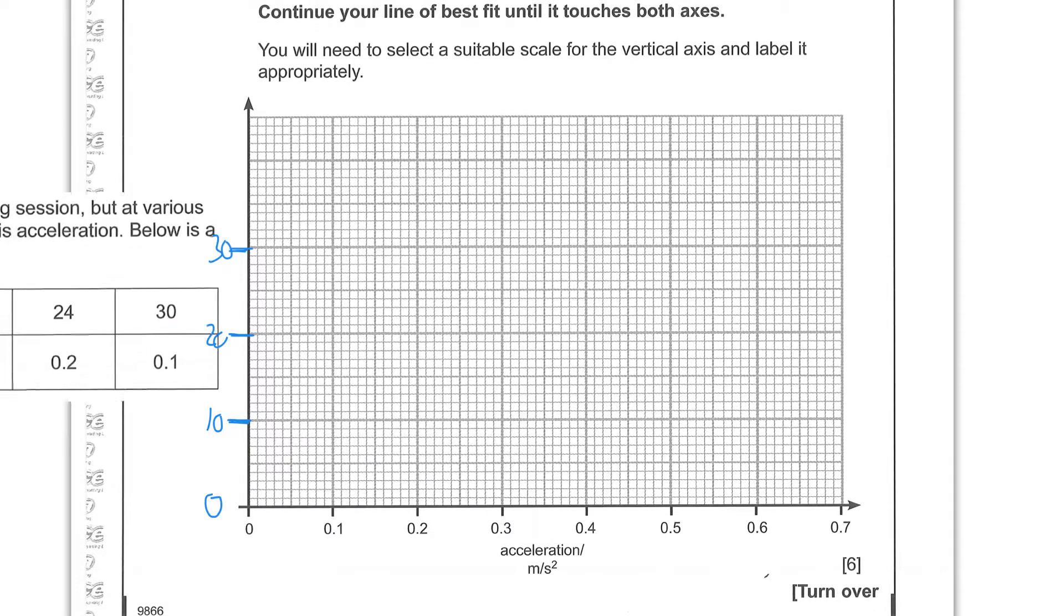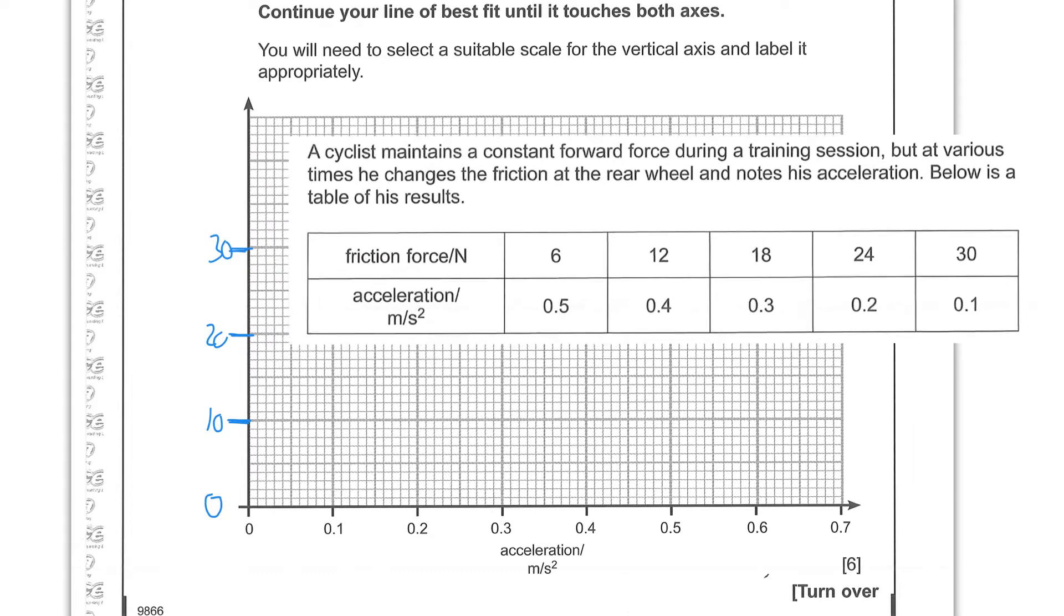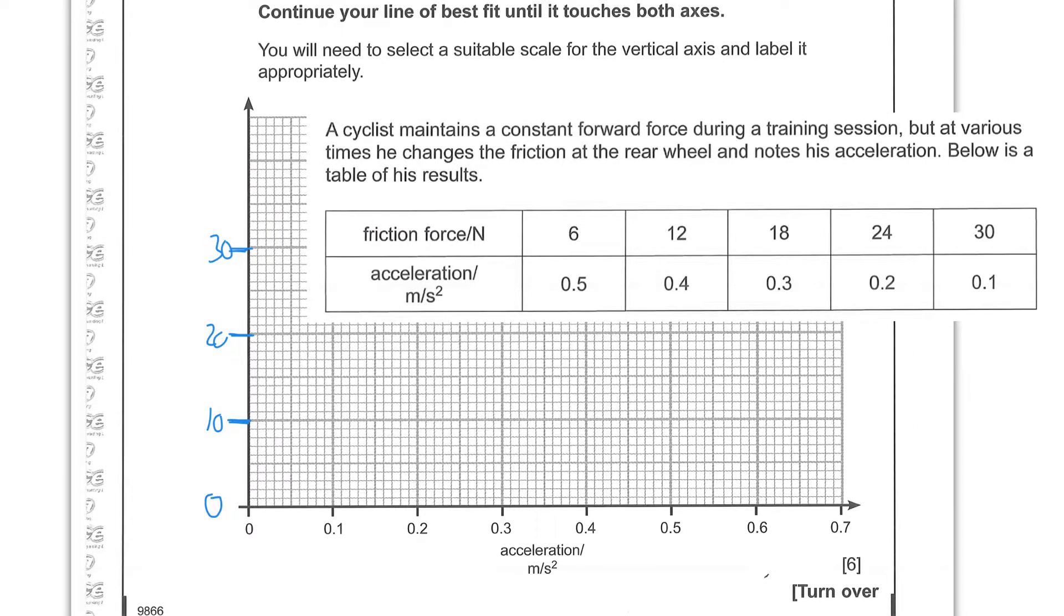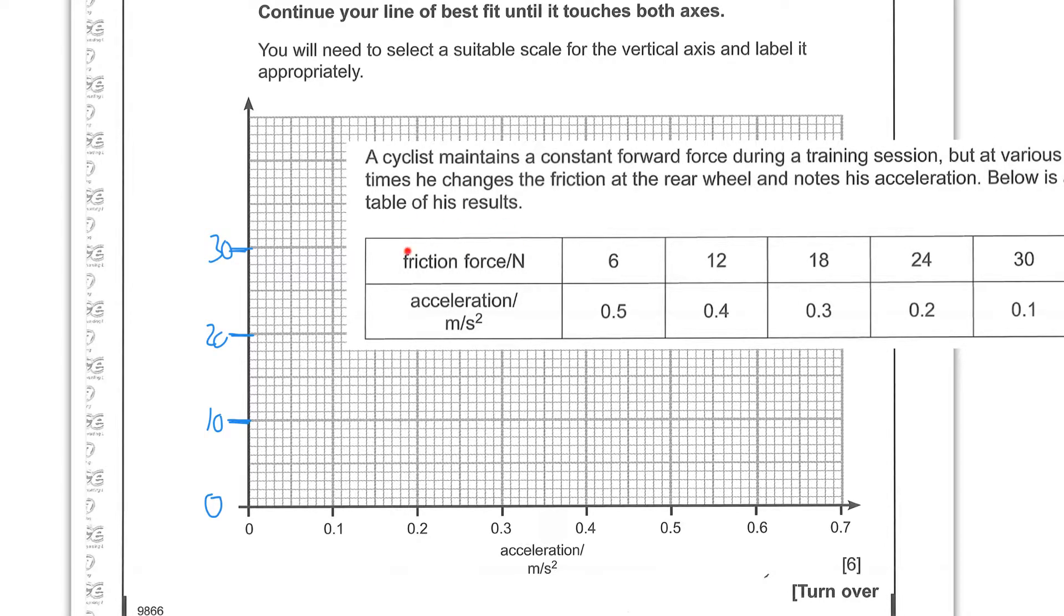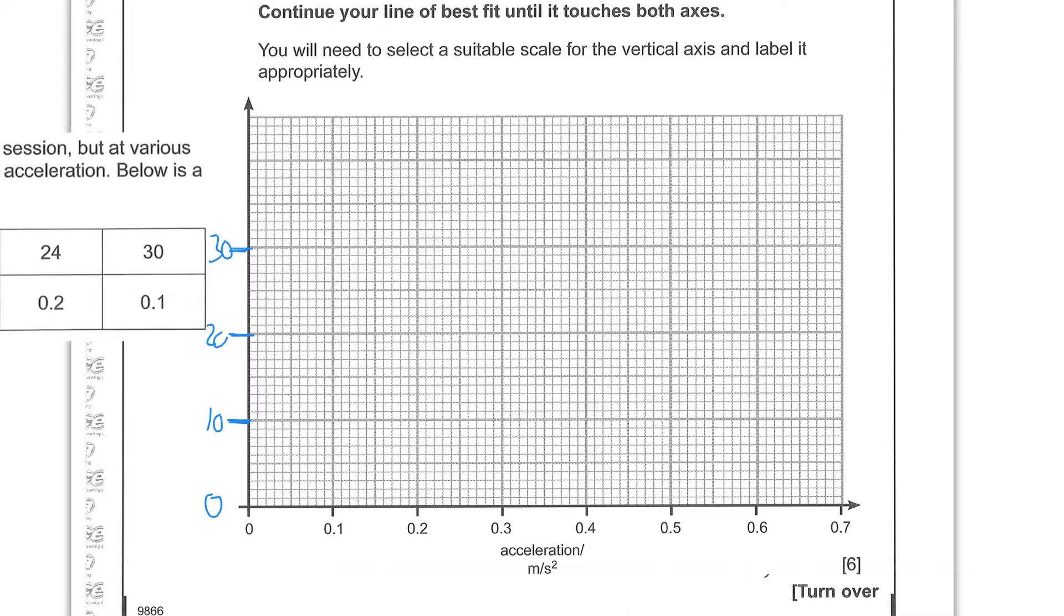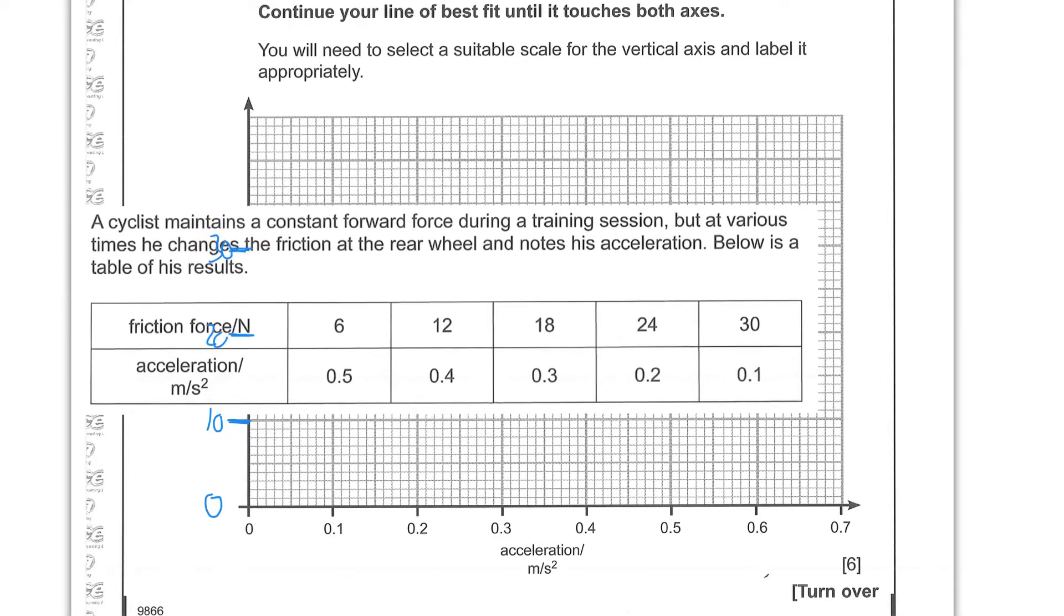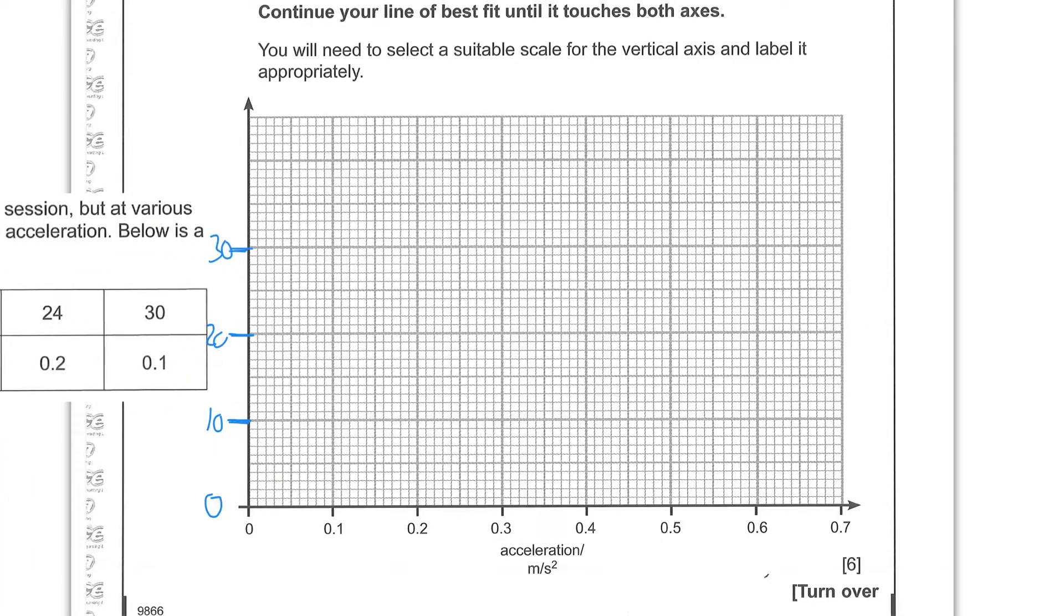So just check the details of this grid. So it is friction in newtons, so that's our title. Remember that your tables transfer to your axis. So that's what we should be putting on this scale here. So let's get rid of that and put on a title and a unit.